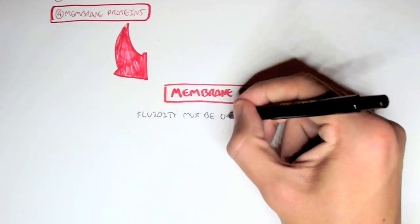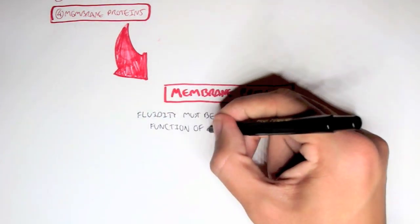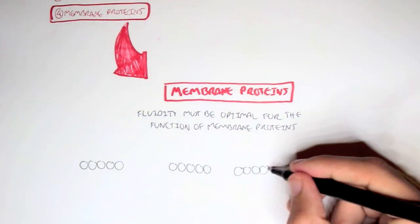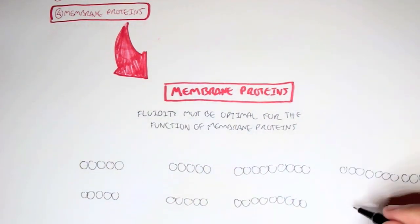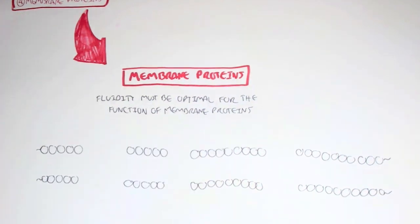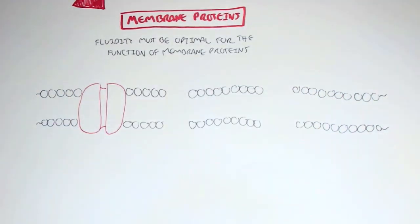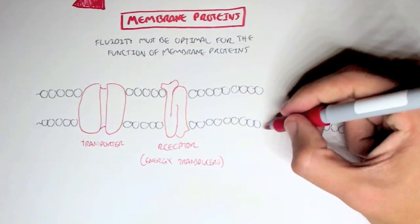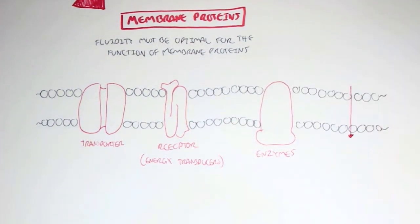Now the fluidity must be optimal for the function of membrane proteins. And we'll look into membrane proteins in the next video in more detail. But let's just look at a quick overview. What are membrane proteins? Well they can be transporters, they can be receptors, energy transducers, they can be enzymes, and obviously they can influence permeability.